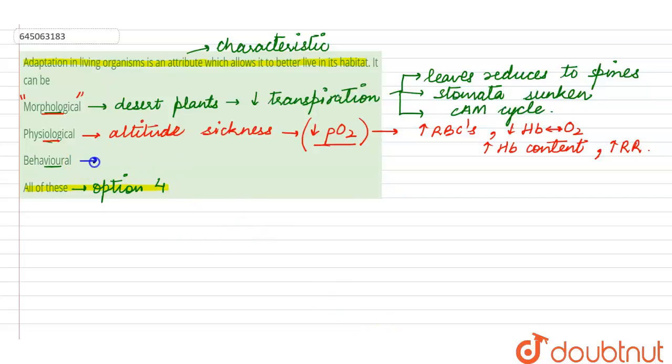Now the third option is behavioral. So in certain desert lizards, it is seen that these desert lizards what they do is they come out, they bask in the sun, they absorb heat, and then they go down into the earth, that is in their burrows.